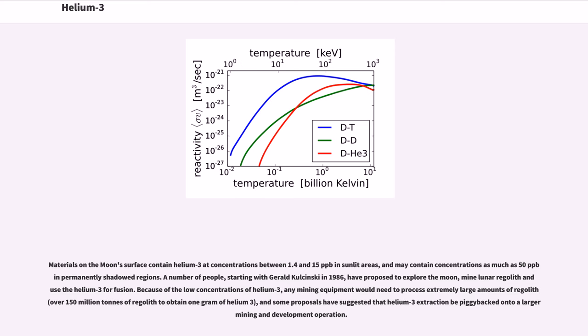Materials on the moon's surface contain helium-3 at concentrations between 1.4 and 15 parts per billion in sunlit areas, and may contain concentrations as much as 50 in permanently shadowed regions. A number of people, starting with Gerald Kulcinski in 1986, have proposed to explore the moon, mine lunar regolith and use the helium-3 for fusion. Because of the low concentrations of helium-3, any mining equipment would need to process extremely large amounts of regolith, over 150 million tons of regolith to obtain 1 gram of helium-3, and some proposals have suggested that helium-3 extraction be piggybacked onto a larger mining and development operation.